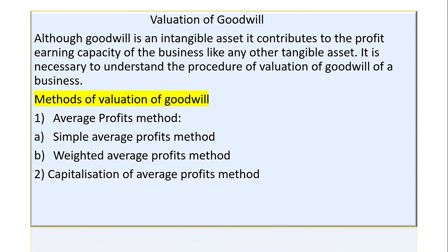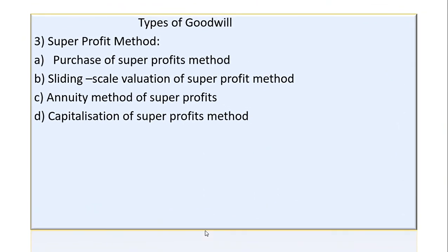The methods of valuation of goodwill are mainly three types. First is the average profit method, which has two sub-types: simple average profit method and weighted average profit method. Second is the capitalization of average profit method. Third is the super profit method, which has four sub-types: purchase of super profit method, sliding scale valuation of super profit method, annuity method of super profit, and capitalization of super profit method. For 5-mark problems, the simple average or purchase of super profit method is used. For 10 or 15-mark case study problems, the capitalization method is used.